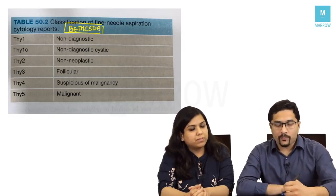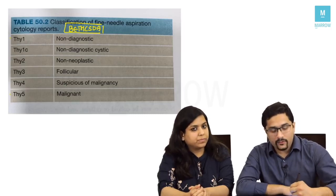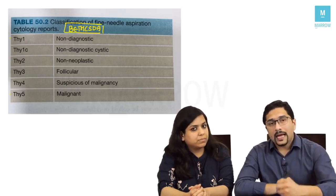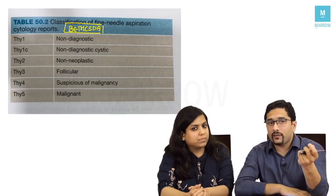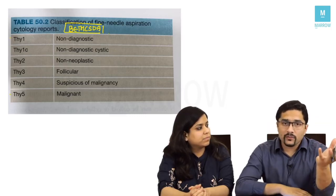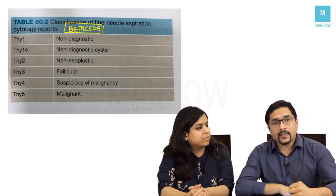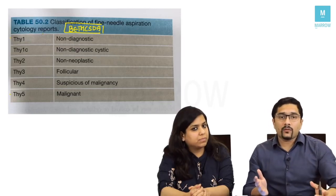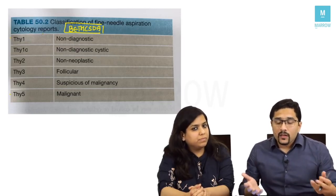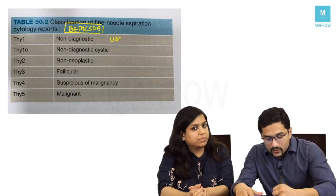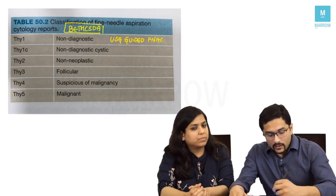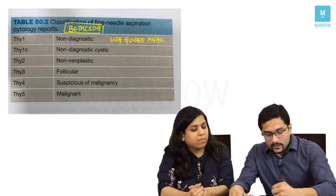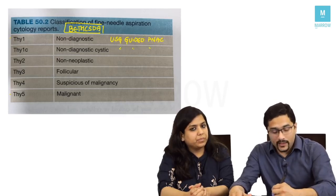The Bethesda classification reports findings as THI1 to THI5. THI1 is non-diagnostic — for example, if the FNAC was inconclusive, it would be reported as THI1 and the next step would be an ultrasound-guided FNAC to hit the right area and reduce false negatives. THI1C is non-diagnostic cystic, for which we would also do an ultrasound-guided FNAC.